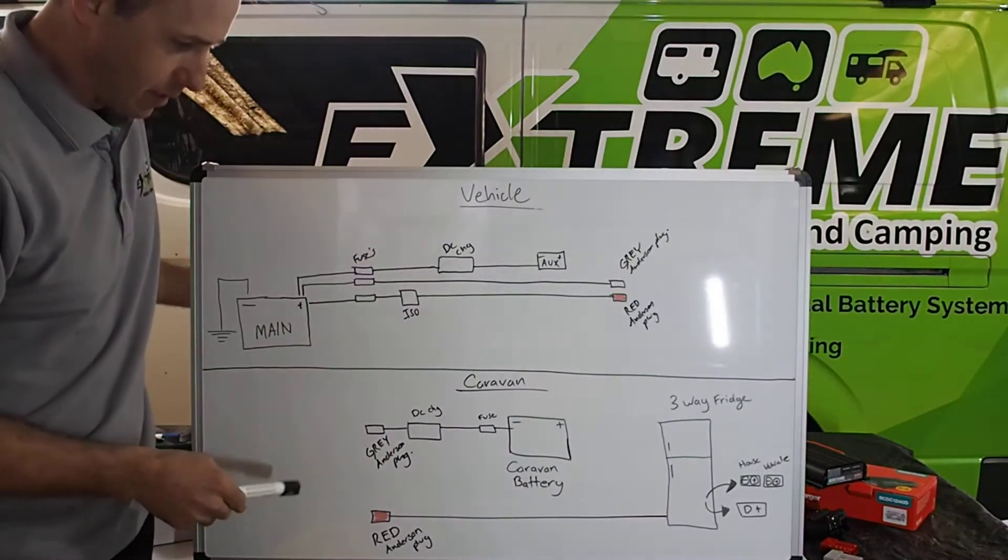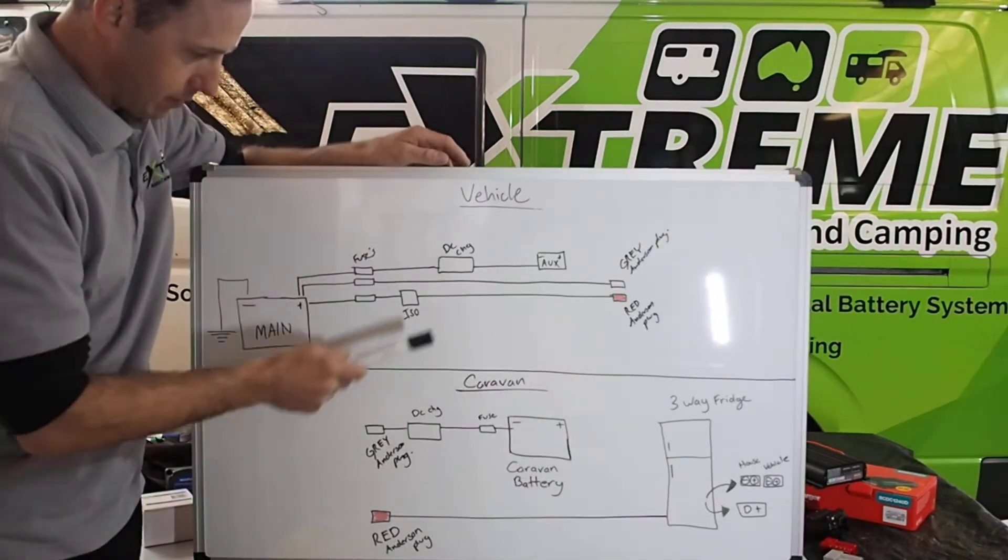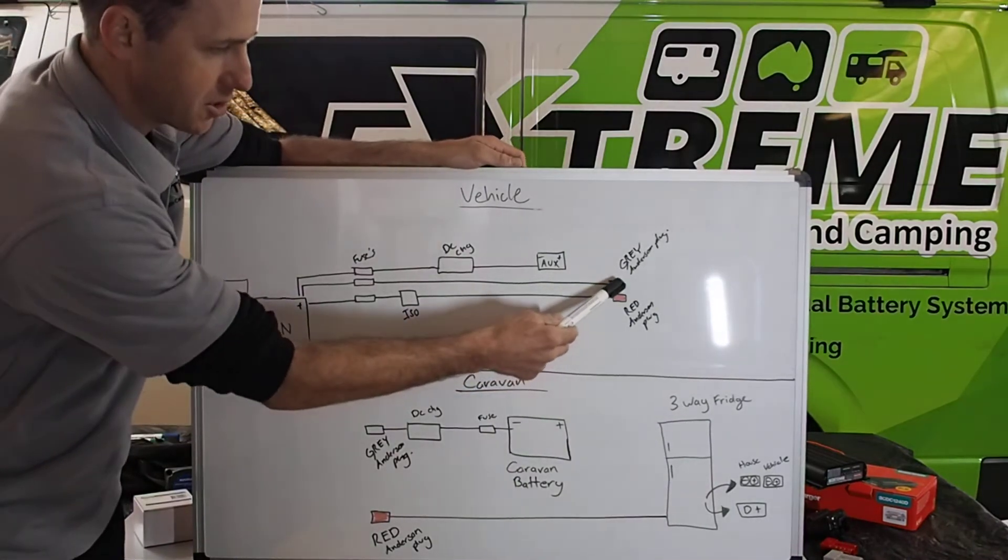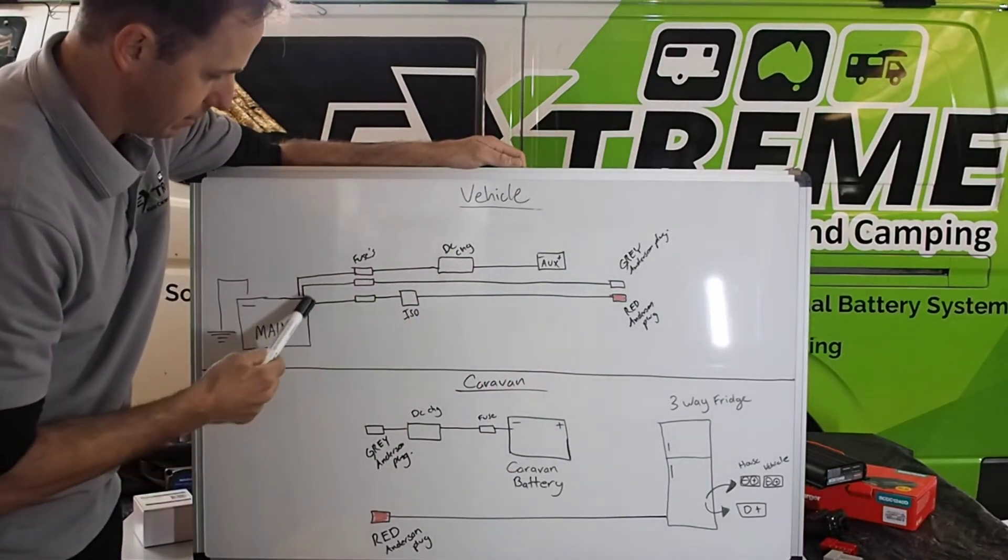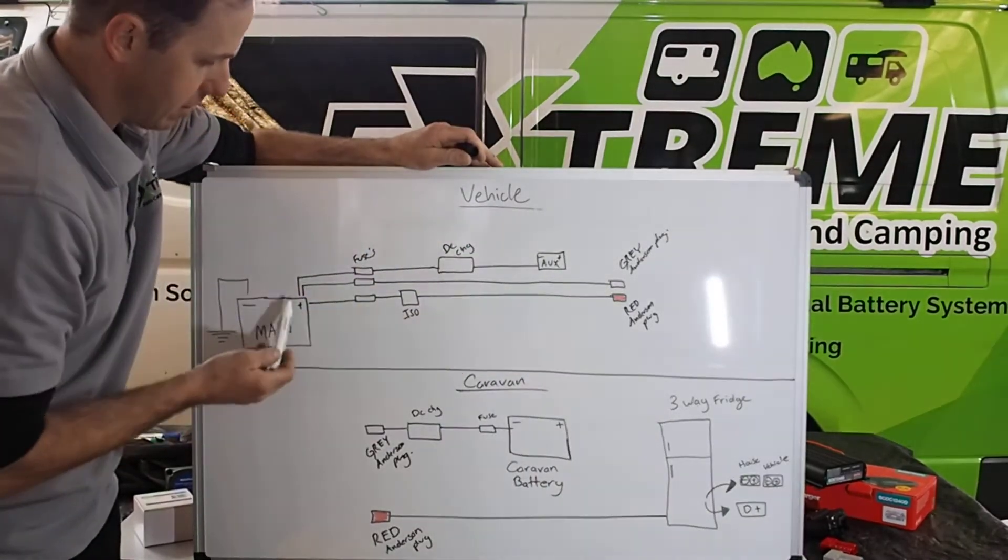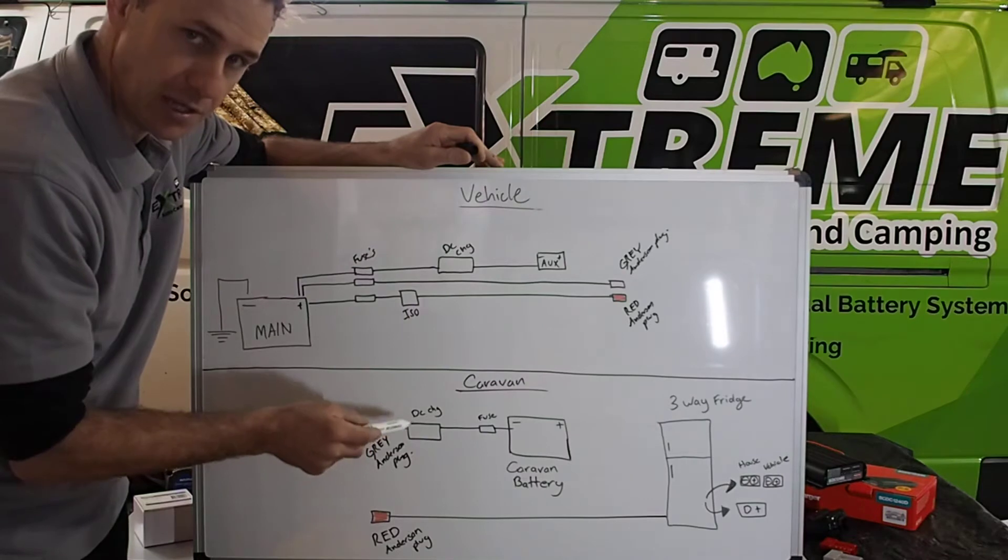Using the red and grey Anderson plug system again. Start with the vehicle main battery. This one here has a solid Anderson grey line, that's this middle one here. And this is because it needs to feed the DC charger that's in the caravan.